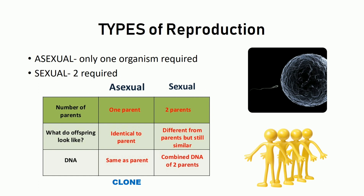Consider yourself — you might have various traits which you share in common with your parents. For example, your eyes might look like your dad's, or your nose might have the same structure as your mom's, but yet you have your own different identity. The reason behind this is in the genetic information. In asexual reproduction, the DNA comes from a single parent, hence the individual is very identical to the parent. However, in sexual reproduction, the DNA is the combined DNA from two parents.